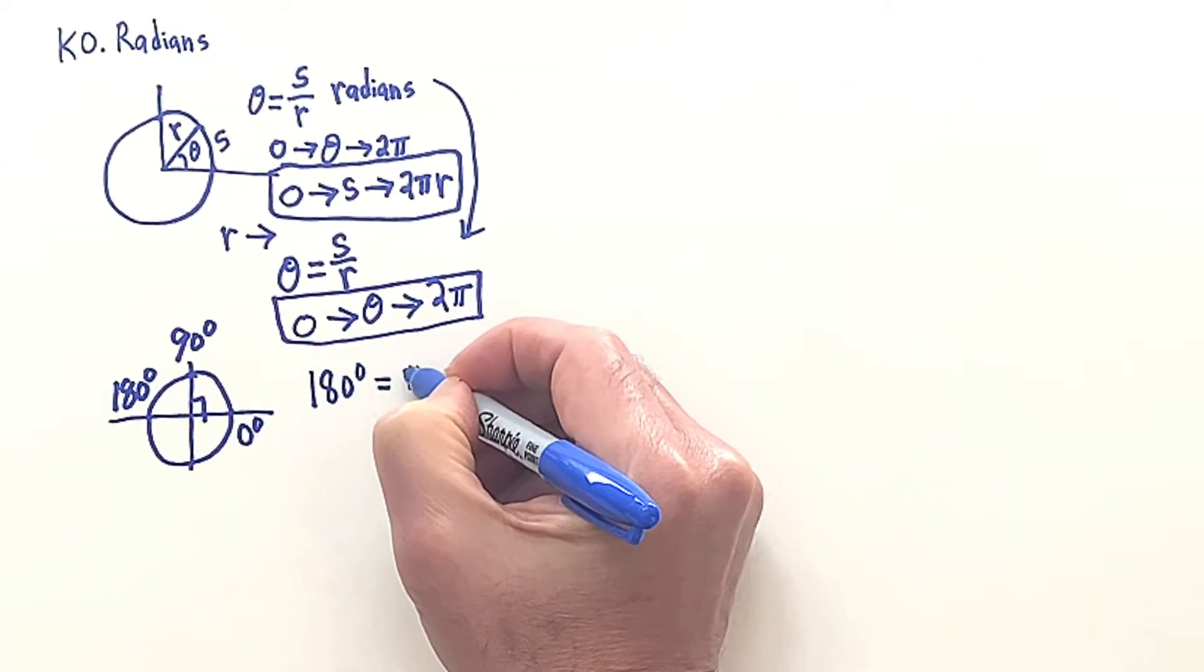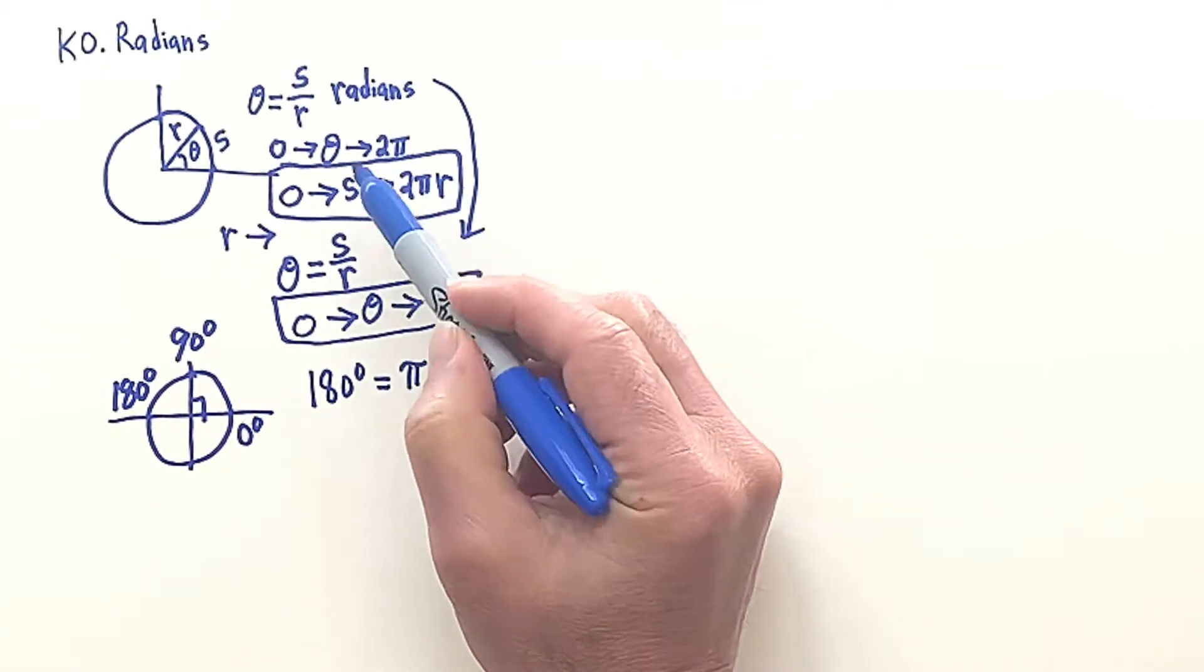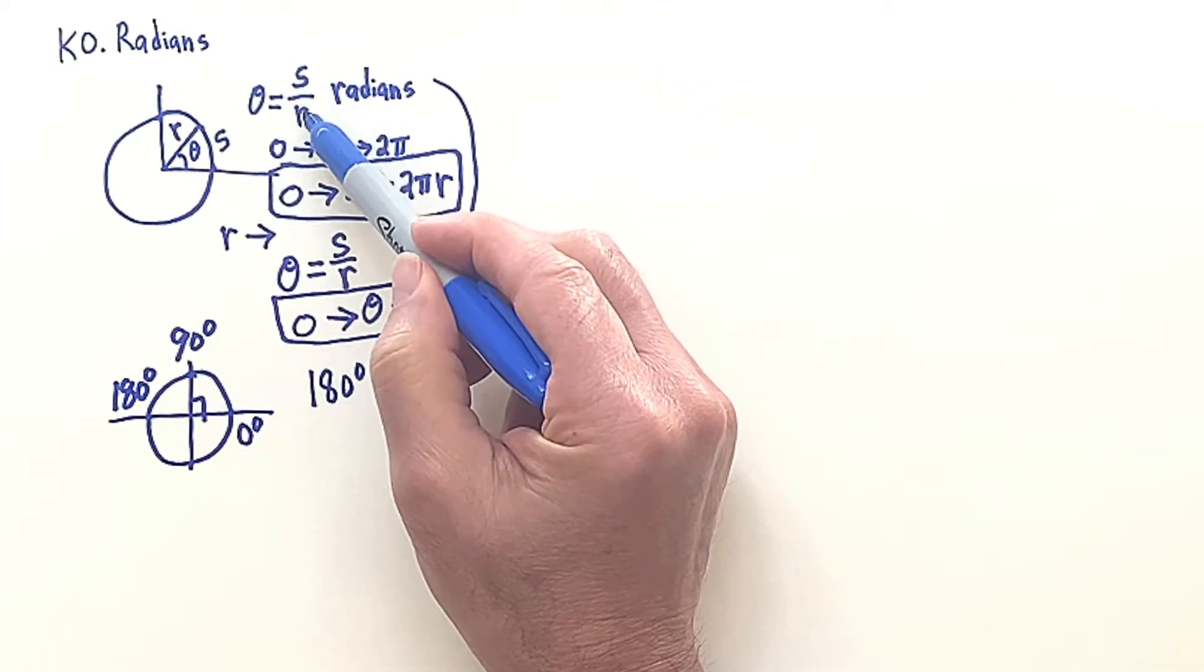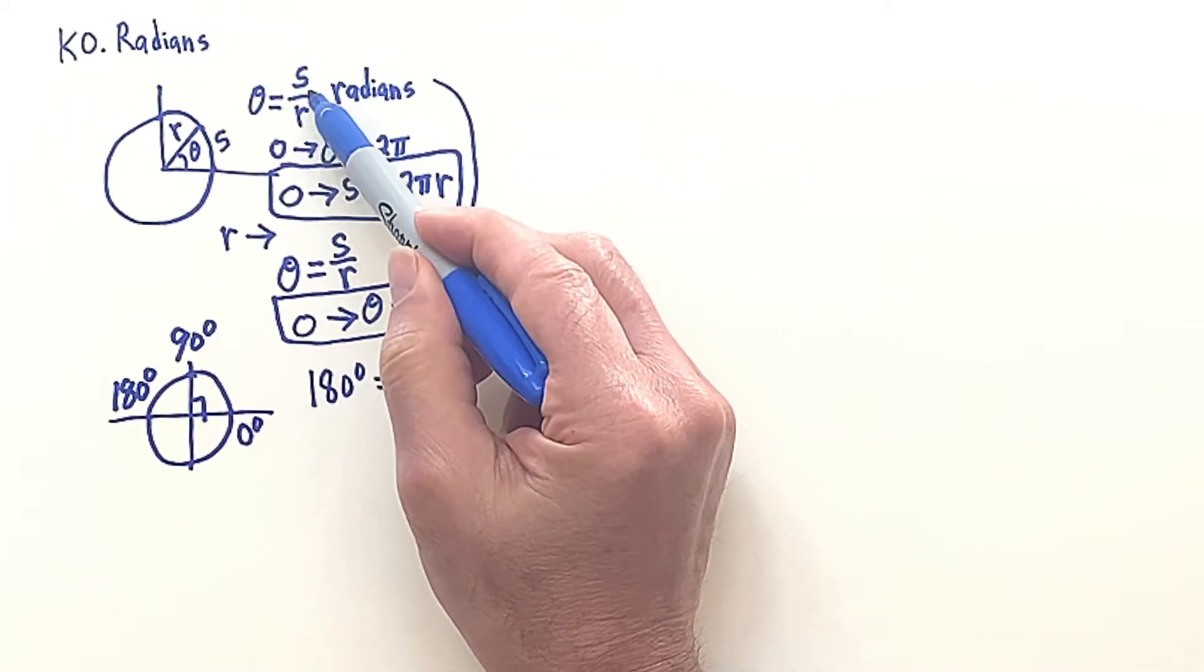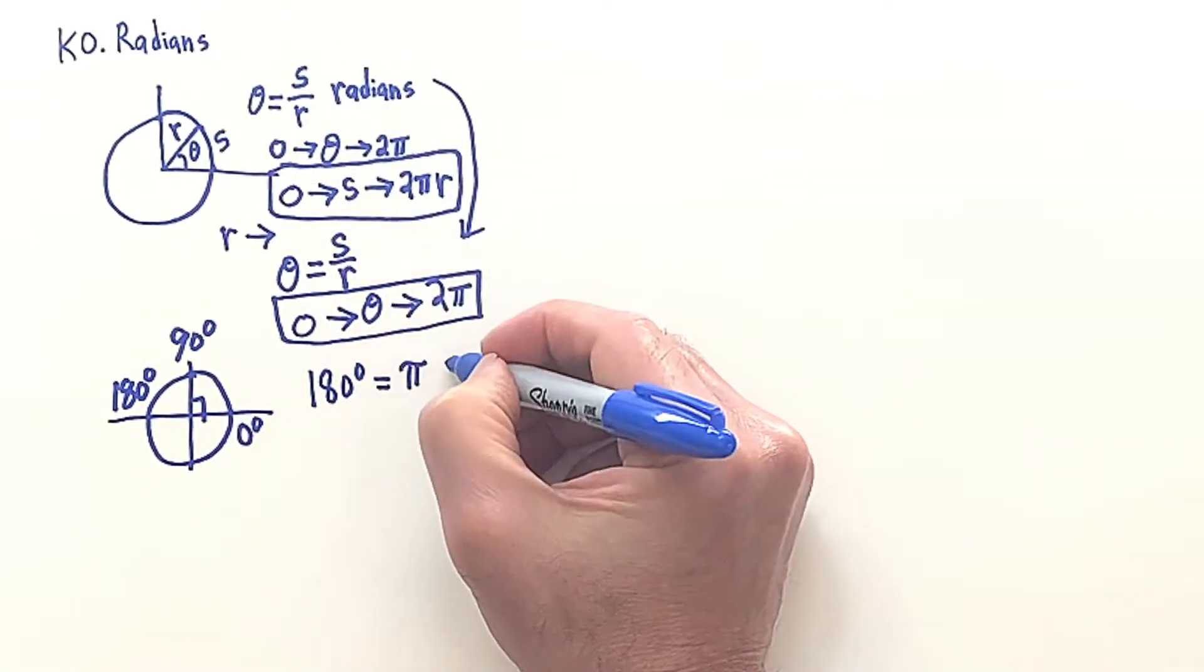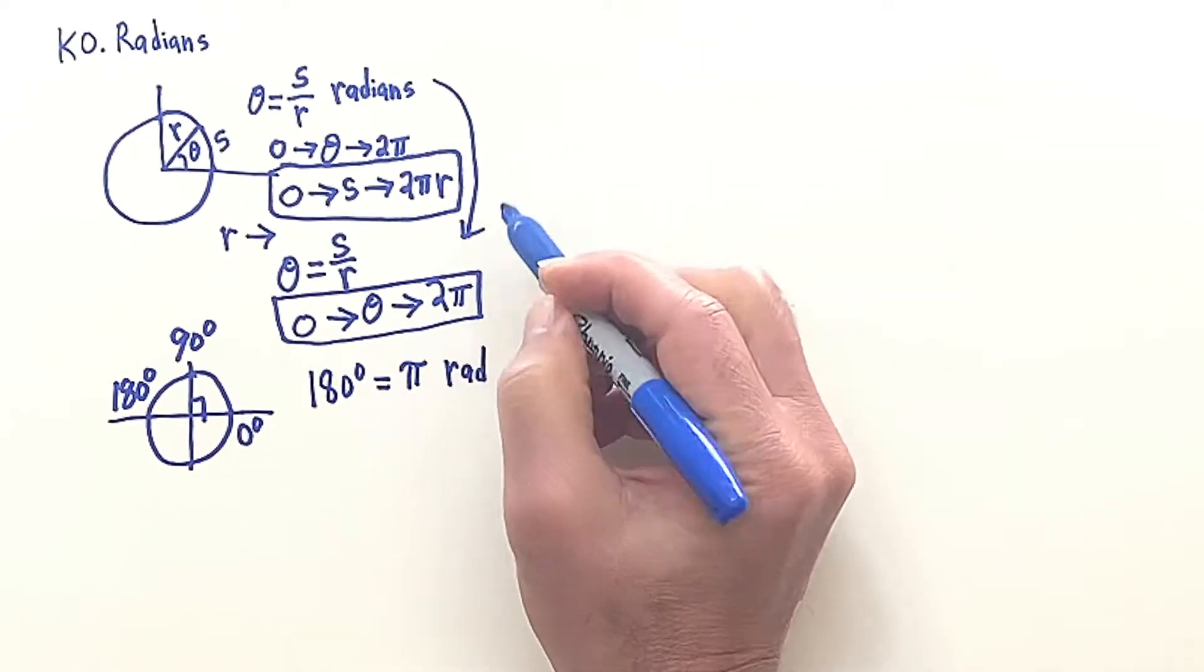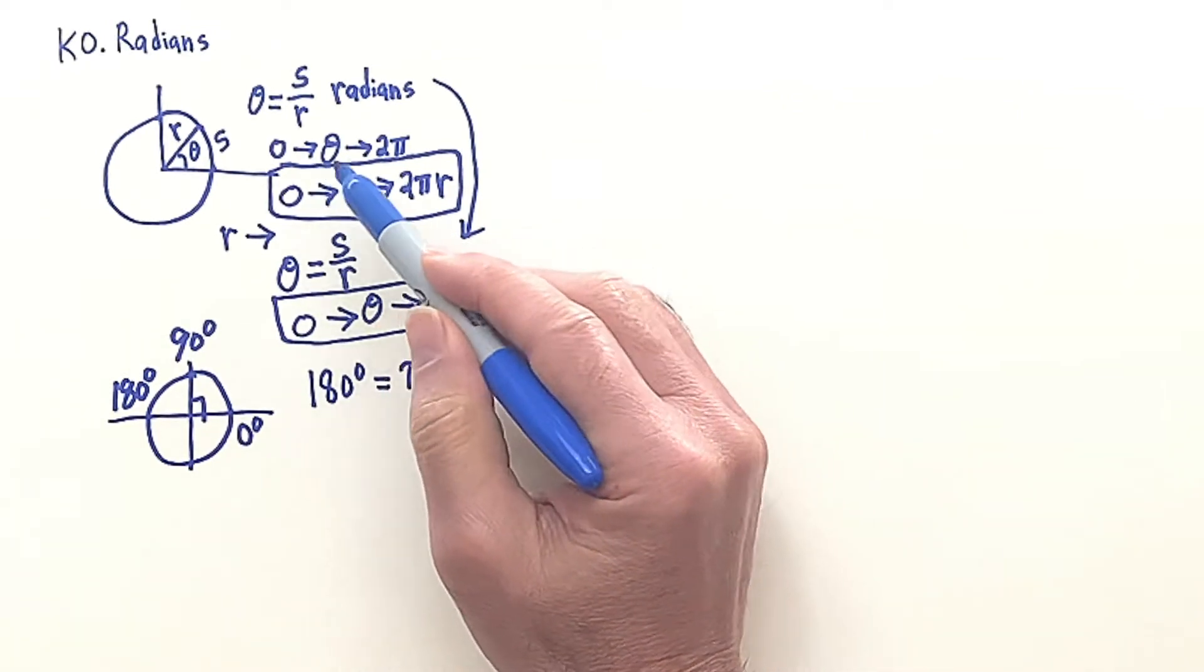So that means that 180 degrees corresponds to pi radians. Now technically, mathematically speaking, the radians has no dimensions because centimeters cancel centimeters or meters cancel meters. But it's nice to think of it as having a dimension which we can call radians or rad, even though it's dimensionless.